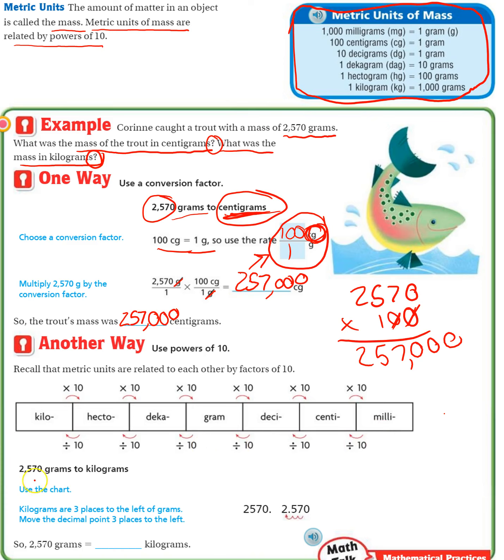So 2,570 grams to kilograms. We're starting at grams and we're going up to kilograms. I write the number 2,570. I want to go from grams to kilograms, so I need to go over 1, 2, 3 to get there. So I move my decimal over 1, 2, 3, which would make my new number 2.57. I can drop off that 0 at the back if I want.